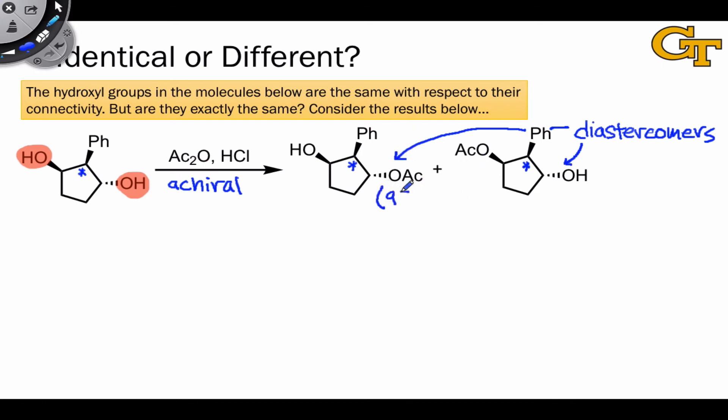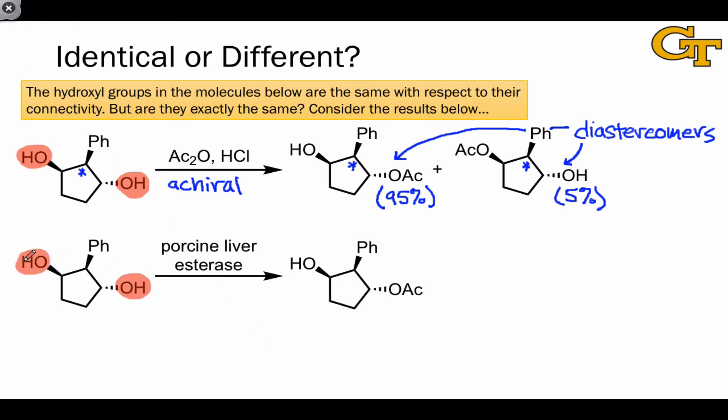We might get something like 95% this diastereomer and 5% this diastereomer, with the exact yields being dictated by both the difference in rate and the difference in thermodynamic stability. If we treat this same compound with the porcine liver esterase, we also observe a difference in the reactivity of the two hydroxyl groups. In fact, we once again end up with 100% yield of a single stereoisomer and 0% effectively of the other diastereomer.